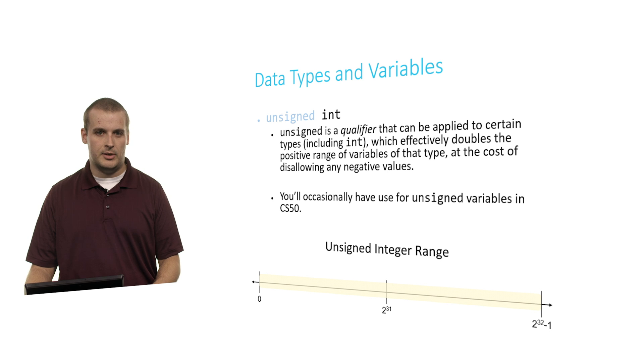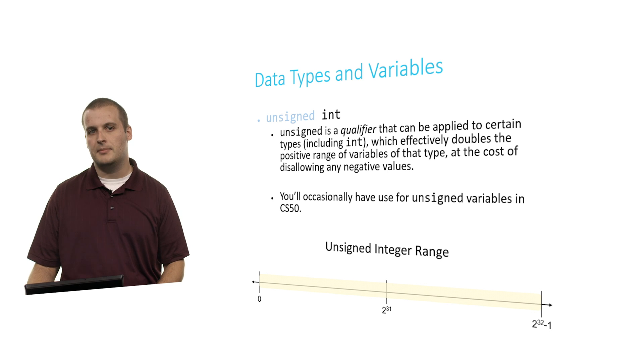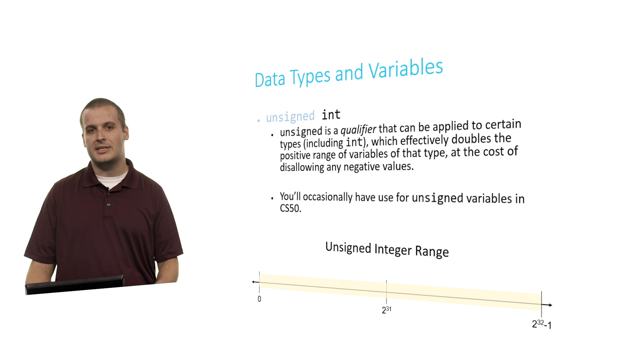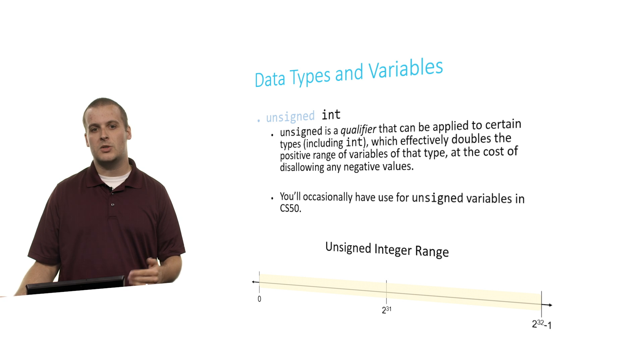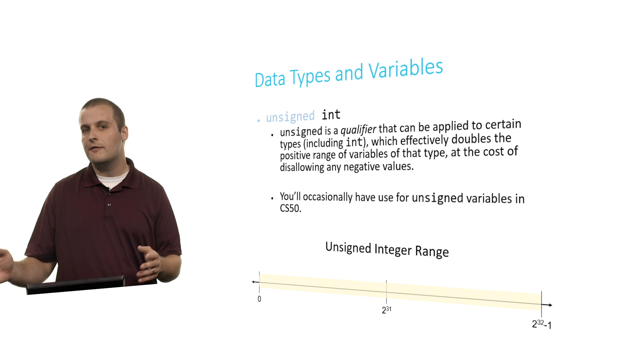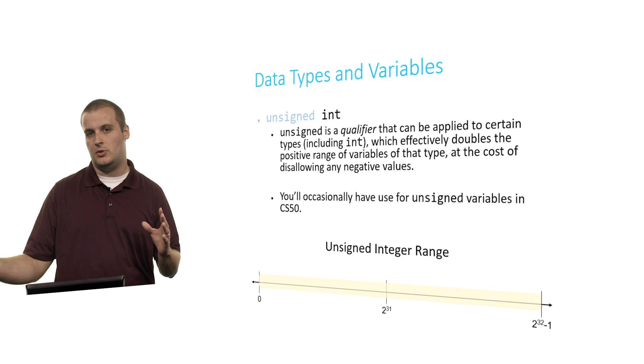You'll occasionally have use for unsigned variables in CS50, which is why I mention it here. The range of values you can represent with an unsigned integer, as opposed to a regular integer, are 0 to 2 to the 32nd power minus 1, or approximately 0 to 4 billion — you've effectively doubled the positive range but given up all negative values. As an aside, unsigned is not the only qualifier — there are also short, long, and const — but it's the only one we're going to talk about right now.